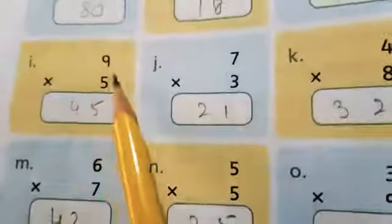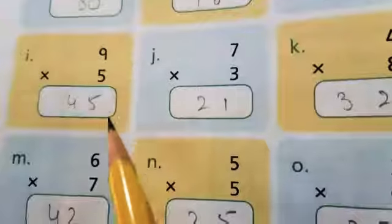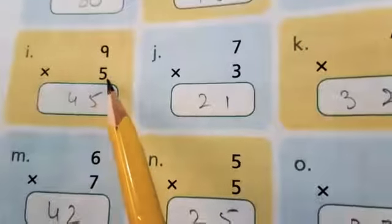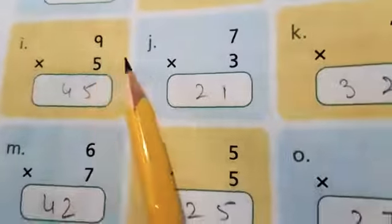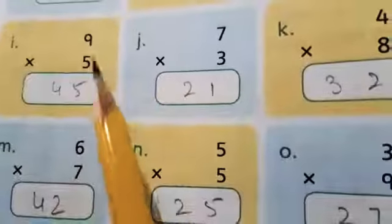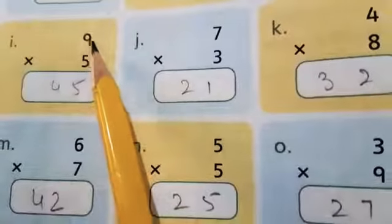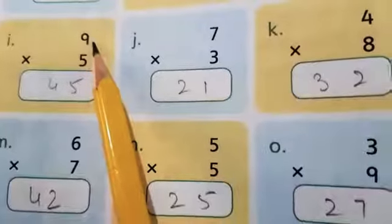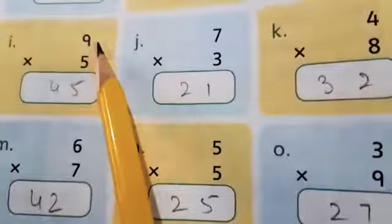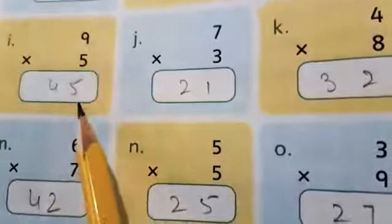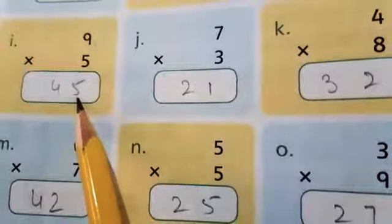Part I, 9-5s or 5-9s are. Answer will become same. So we will start table of 9. 9-1 is 9, 9-2s are 18, 9-3s are 27, 9-4s are 36, and 9-5s are 45. So write 45 here.